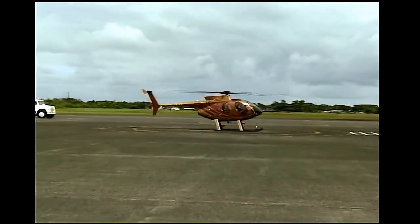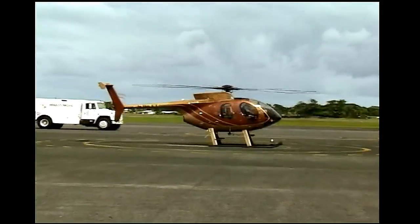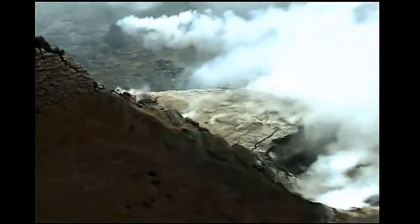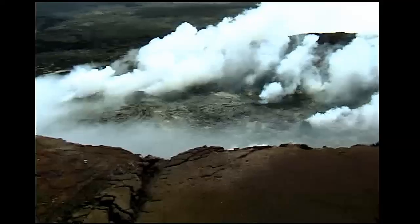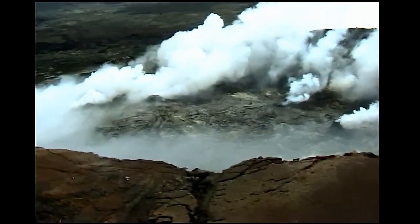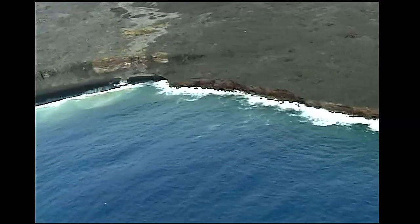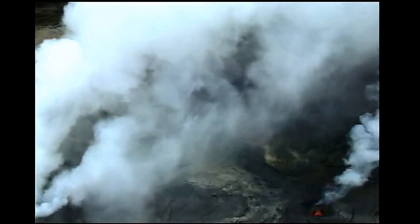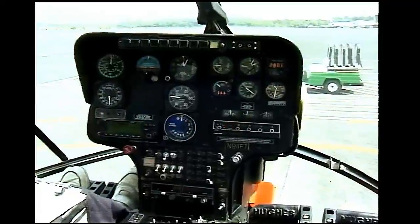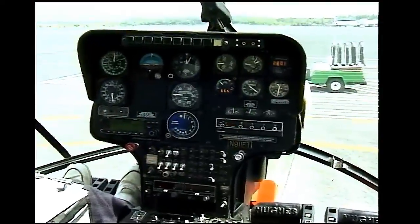This is a four passenger helicopter that takes tourists on rides to view an active volcano over Hawaii. Helicopters can not only fly forward and backwards, but they can also fly vertically. This is the inside dash of the helicopter.